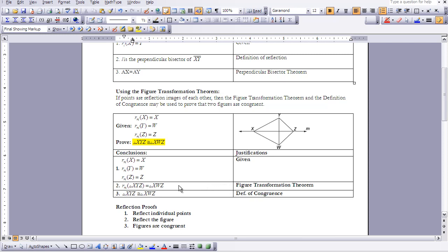Now that something's been reflected, we can say that figure is congruent. This triangle was reflected and our image was XWZ. That means those two triangles are congruent to each other because of the definition of congruence.